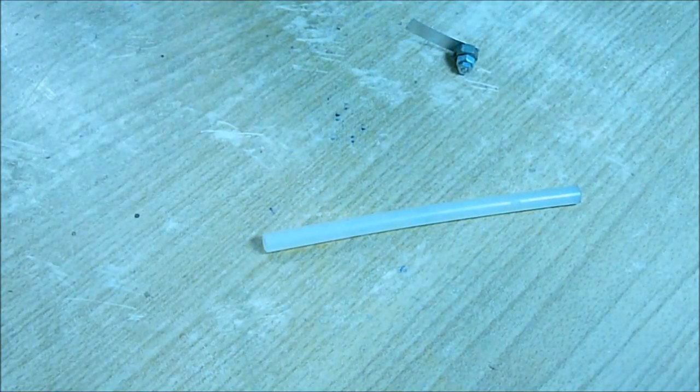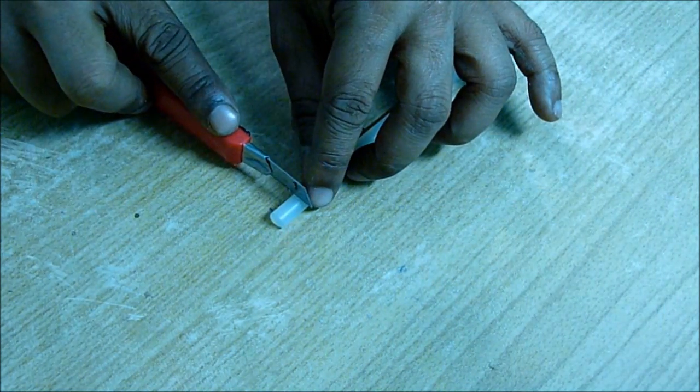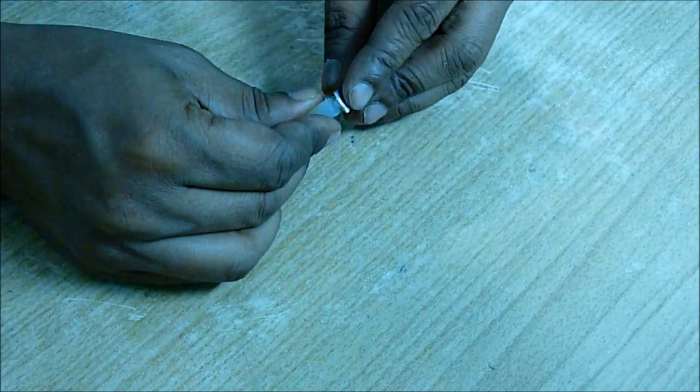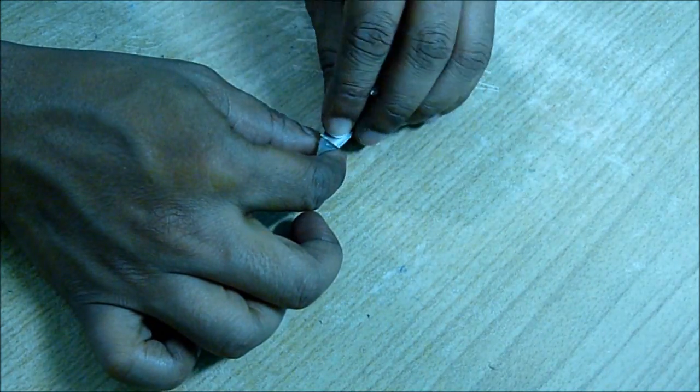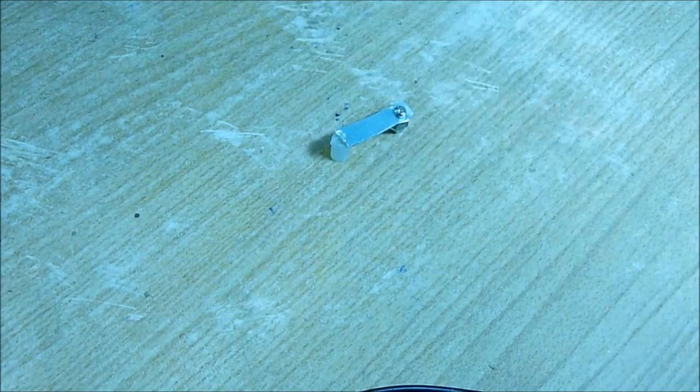Then take a glue stick. From that stick cut around 1 cm long. Push the aluminum plate there and glue it. On the other side punch a hole using a pin.